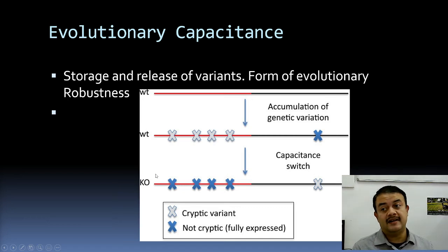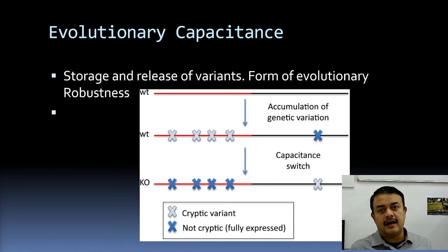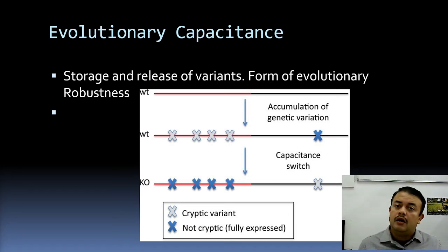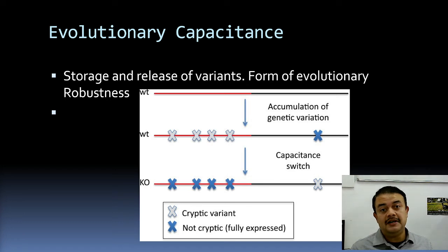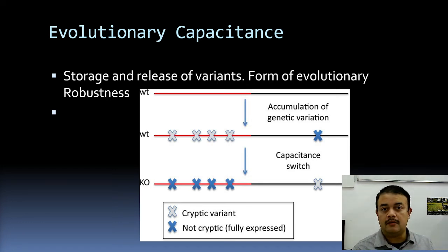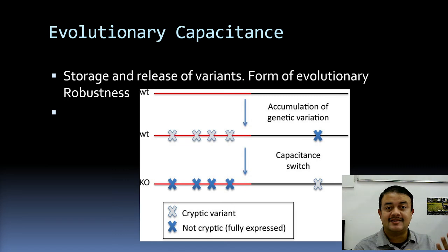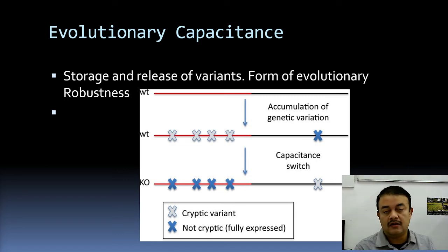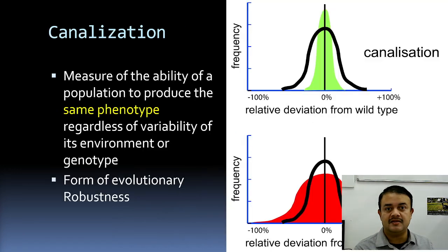Examples of evolutionary capacitance include chaperones like heat shock proteins (HSPs) and enzyme promiscuity. Enzyme promiscuity means the same enzyme can catalyze reactions with various ligands — these also serve as examples of evolutionary capacitance.